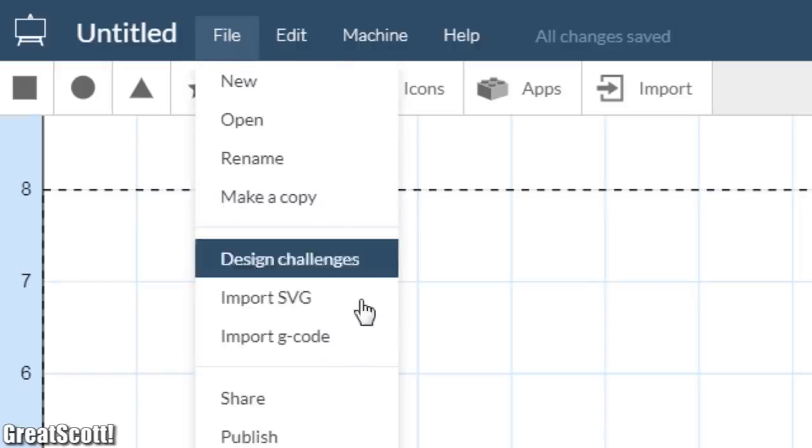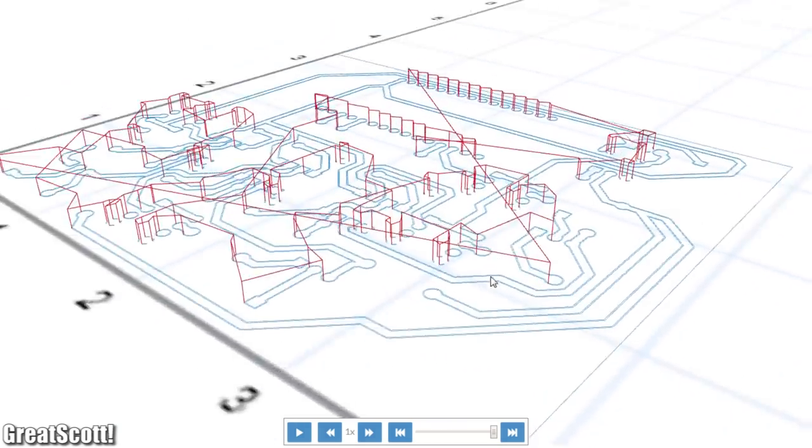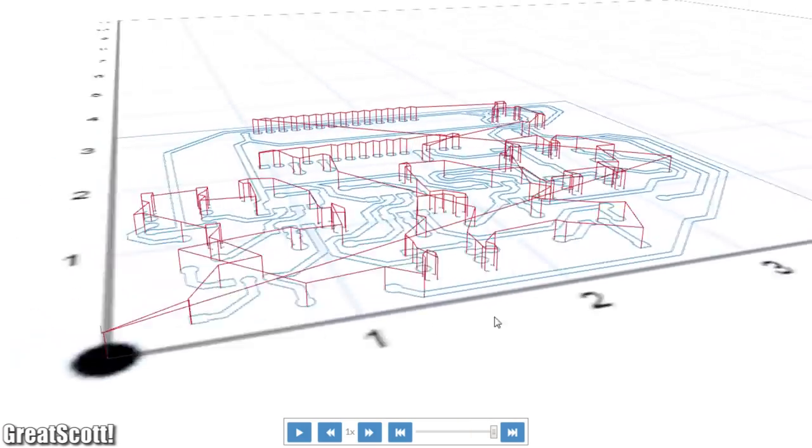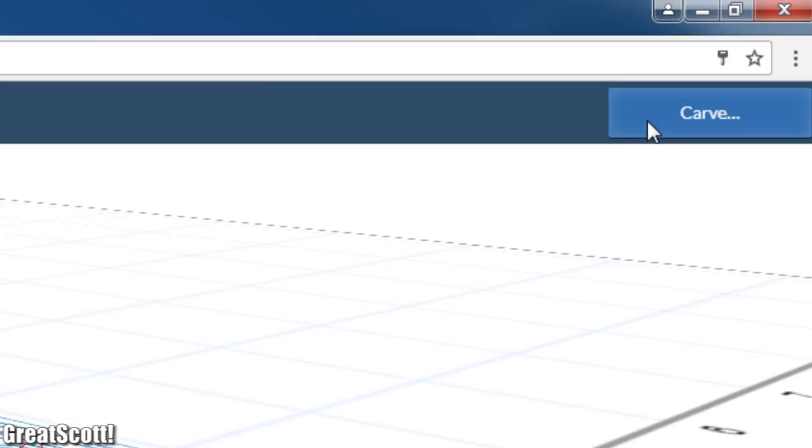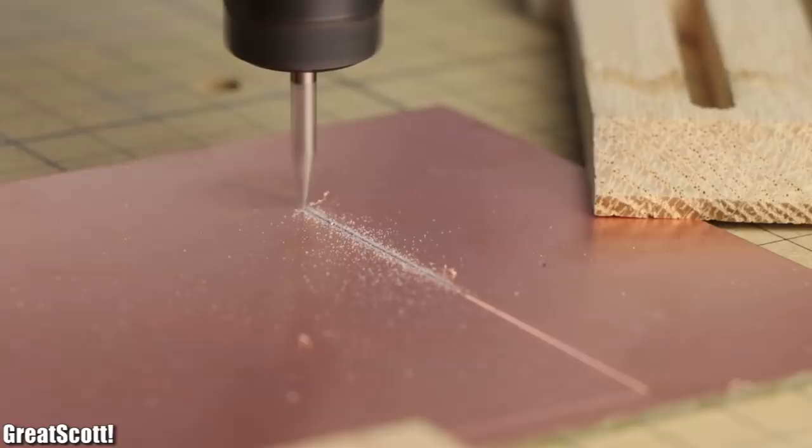By clicking the import G-code option, I selected the G-code we just created, which according to the preview screen should theoretically work just fine. That means it was time to click carve and see how the X-Carve translates the machine codes into proper movement.